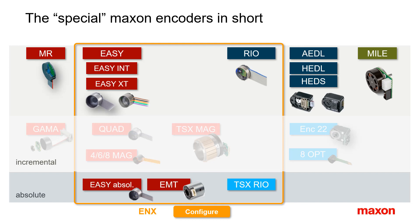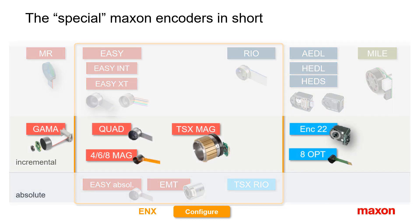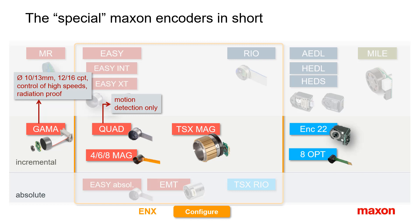After learning more on the main Maxon encoder families, let us have a short look at the specials. The Gamma is a low-resolution magnetic encoder for brushed motors — a magnetoresistive encoder that is insensitive to radiation and can be used in applications with exposure to X-ray or other ionizing radiation. The QUAD encoder gives just 4 states per turn and is rather a sensor for supervising purposes: does the motor rotate and in which direction? It should not be used for feedback and does not work with Maxon controllers.